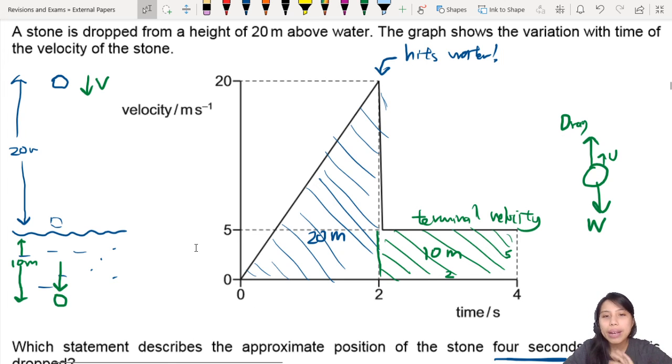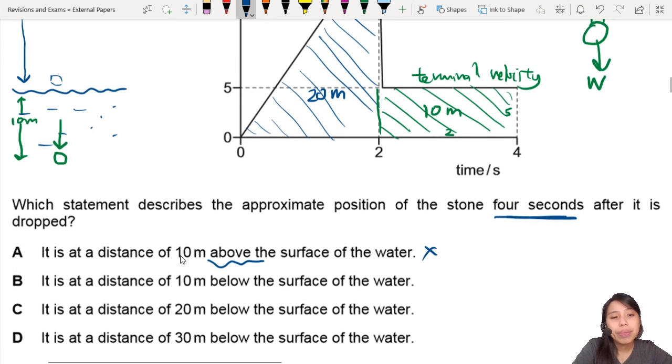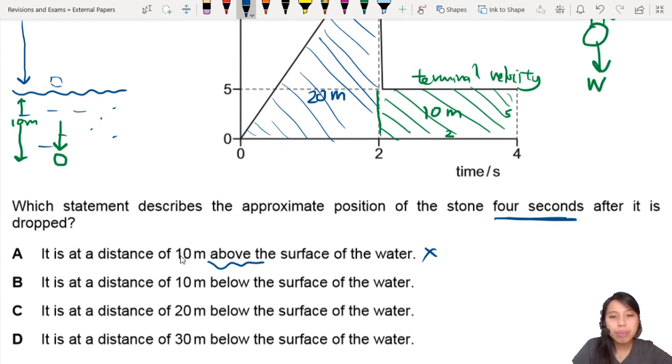So with this in mind, what is the best choice here? It is at a distance of 10 meters above the surface of the water. No, we know it's gone into the water. So this is wrong. B. It is at a distance 10 meters below the surface of the water. That sounds correct. That's about right. This is the green color one that we found. So maybe this is the answer. But let's check the rest just to be sure.